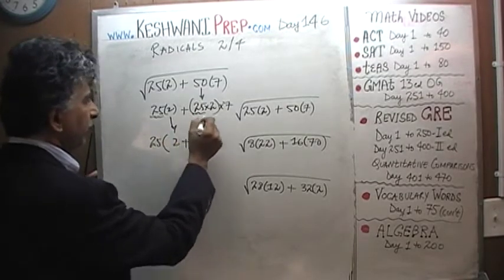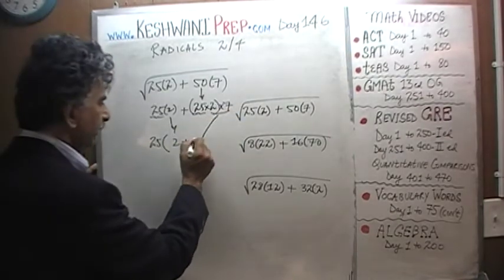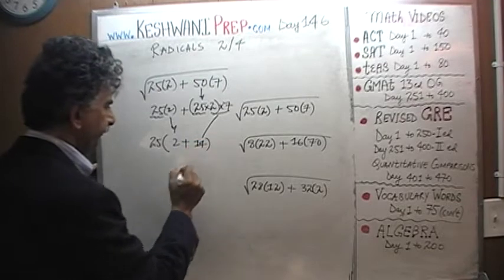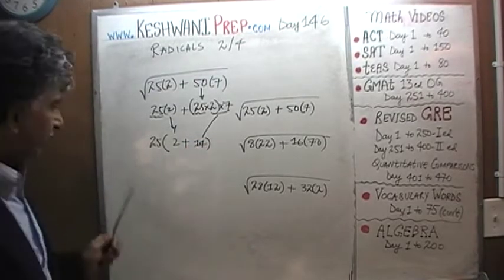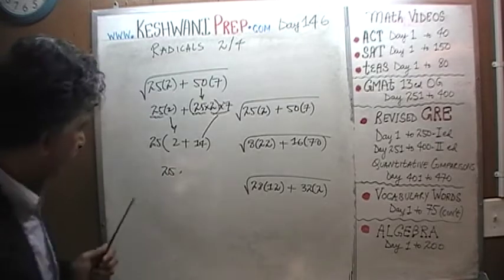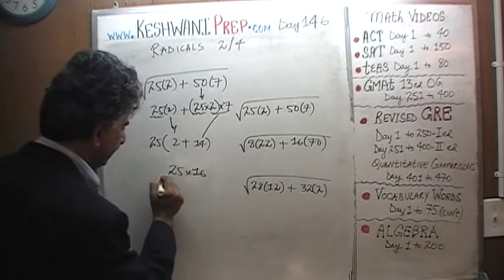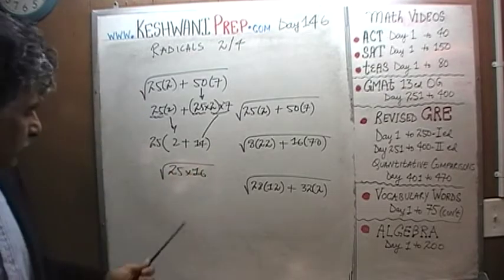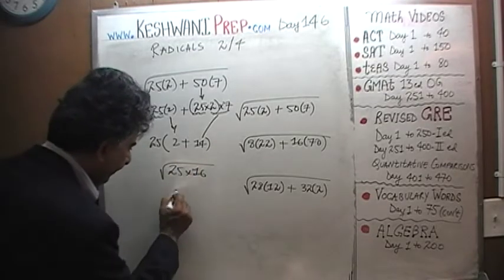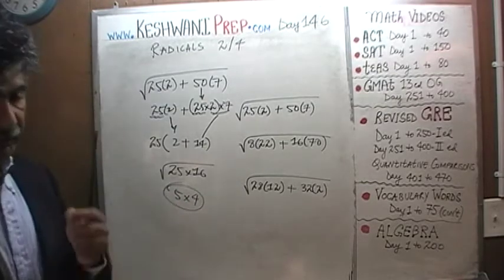This 2 is going to end up here. And here we are going to end up with 2×7. 2×7 is going to end up here as 14. 2 plus 14 is 16. So we end up with √(25×16). Now we take the square root of it. The square root of 25 is 5. The square root of 16 is 4. The answer is 5 times 4.